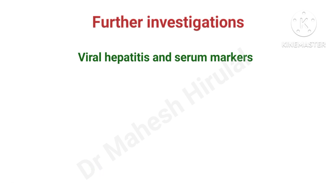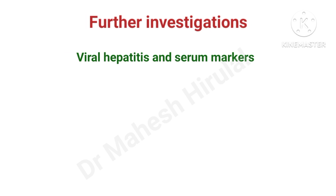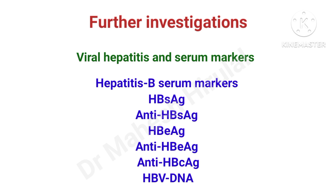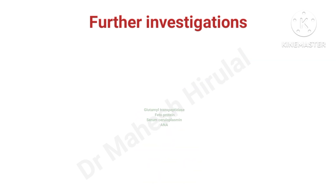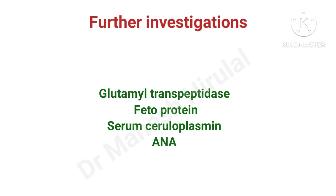In hepatocellular jaundice, especially in viral hepatitis, the diagnosis has to be confirmed with different serological investigations. Investigations like gamma-glutamyl transpeptidase, alpha-fetoprotein, serum ceruloplasmin, ANA, etc. are used to make the specific diagnosis of hepatobiliary disorders.